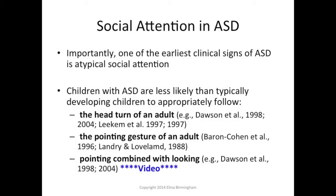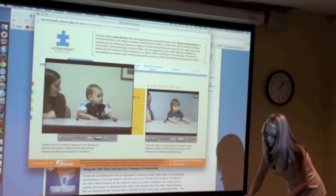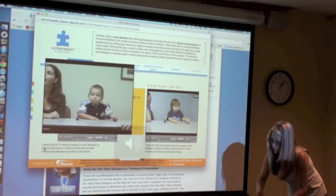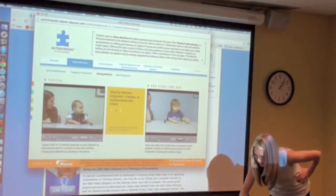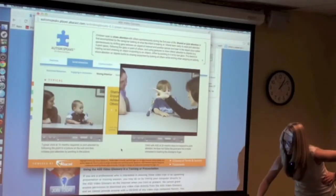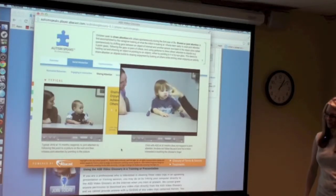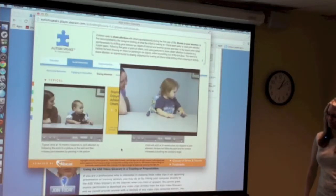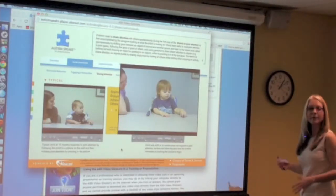All this is somewhat abstract, so I'm going to show you a video of what this looks like. This is a typically developing child — pay attention to what's happening on the right side of the screen. There's an experimenter hidden behind the camera who's going to do something; watch the child's response. Now let's look at autism — this is a child with ASD. This is one of the earliest clinical signs that something might be different.